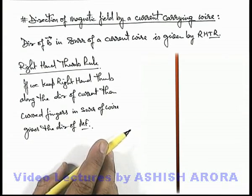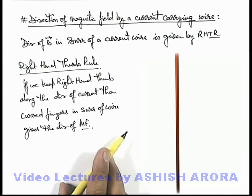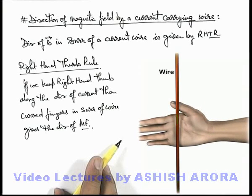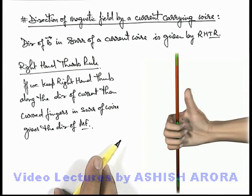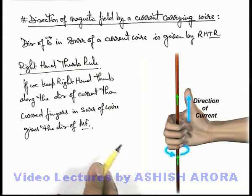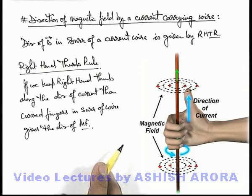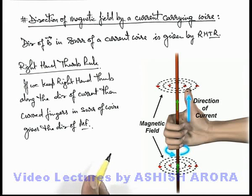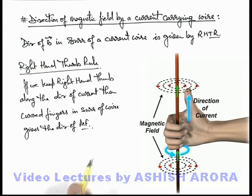Here you can have a look at the realistic diagram to understand this right-hand thumb rule. Here you can see this is a straight wire carrying a current in the upward direction. If we hold this wire with the right hand, keeping the thumb along the direction of current, then the curved fingers give us the direction of the magnetic lines of force. The magnetic lines are generated in the surrounding of this straight current carrying wire in the form of concentric circular loops. At any point — a, b, and c — the direction of magnetic field is given by the direction along the tangent of the magnetic line at those points.